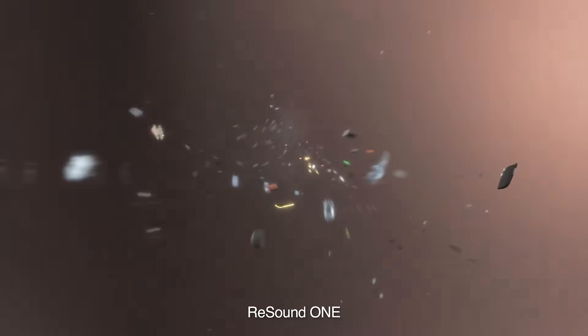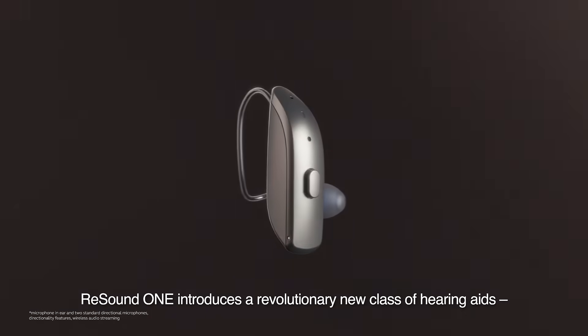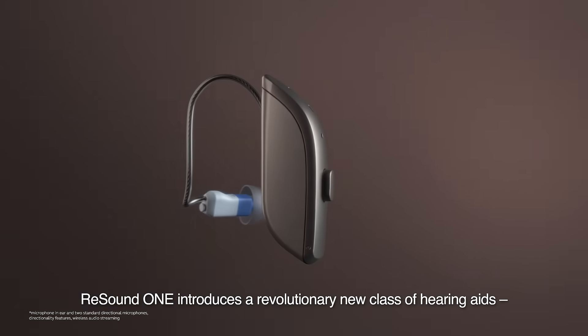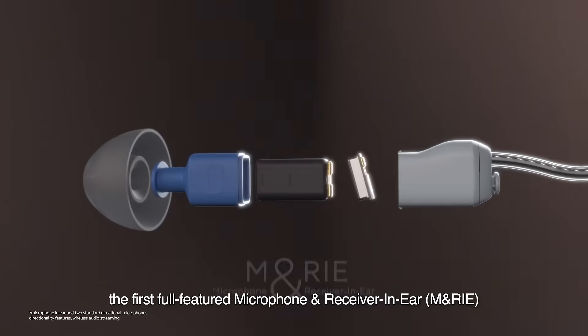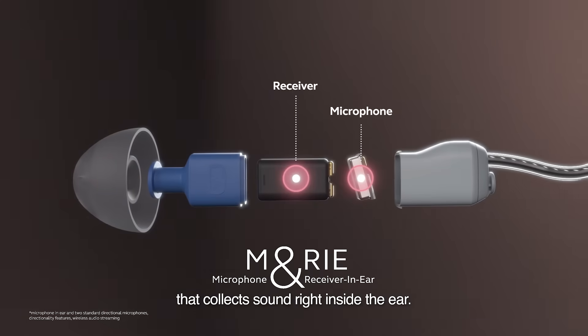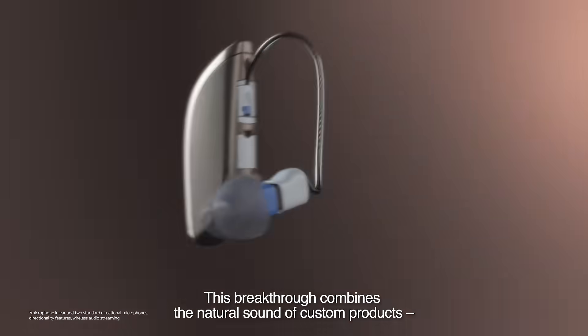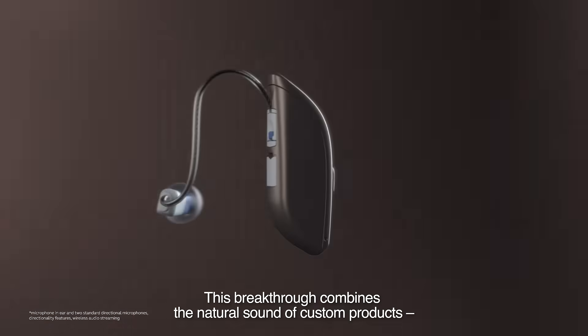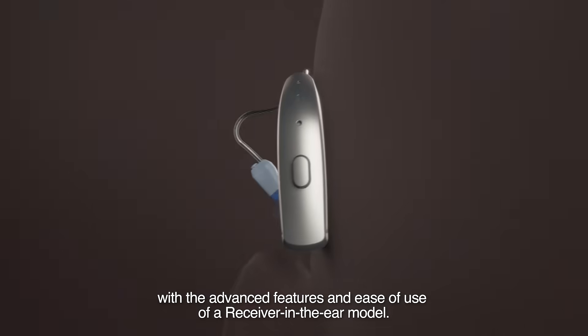That all changes with ReSound One. ReSound One introduces a revolutionary new class of hearing aids—the first full-featured microphone and receiver in-ear (M&RIE) that collects sound right inside the ear. This breakthrough combines the natural sound of custom products with the advanced features and ease of use of a receiver in-ear model.